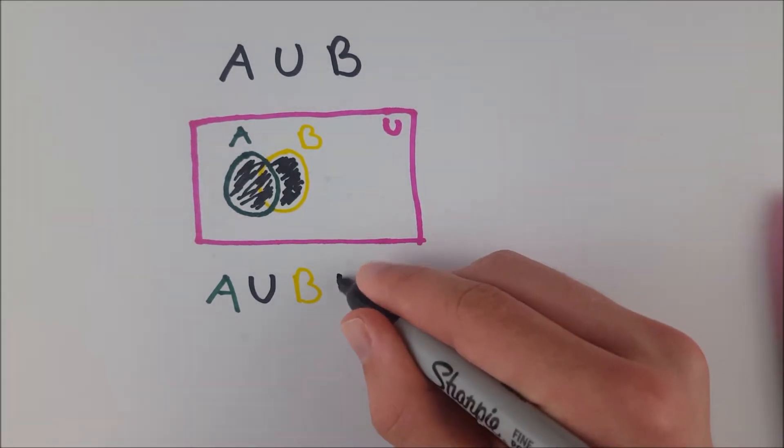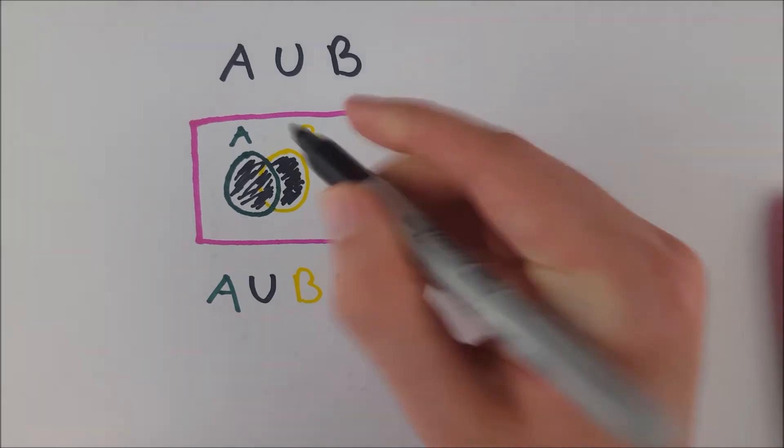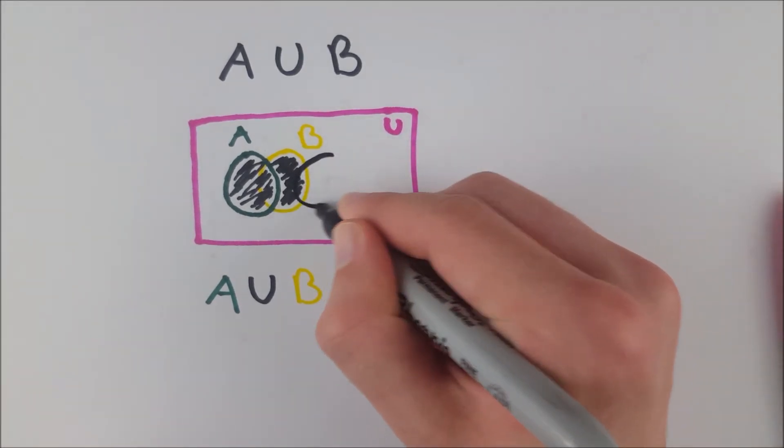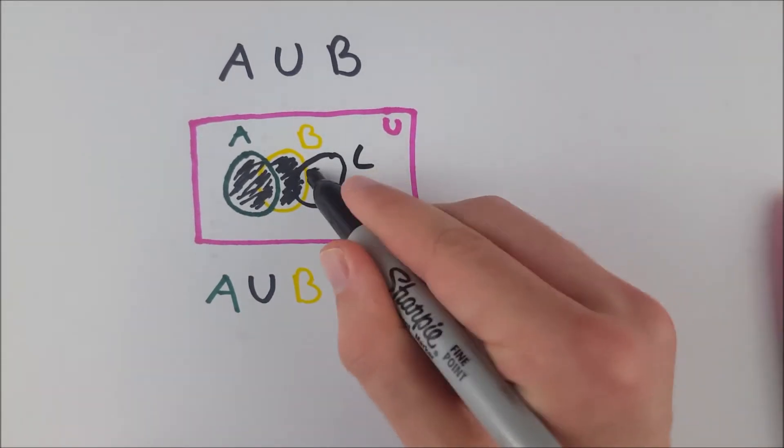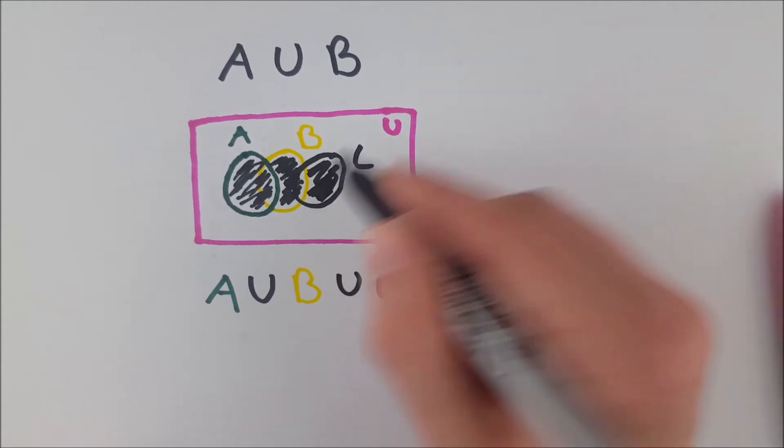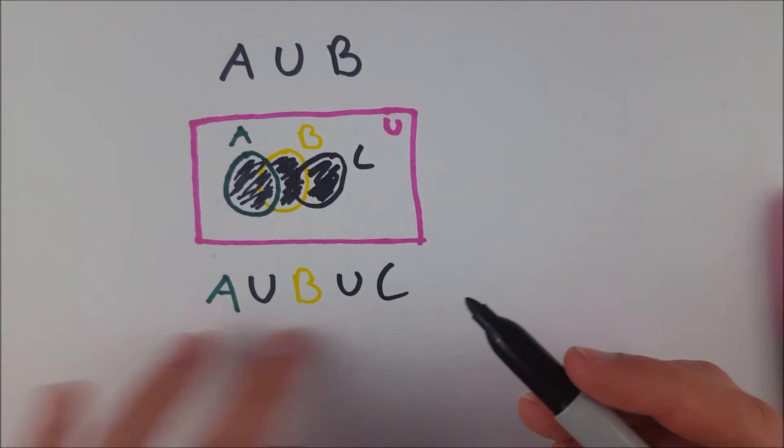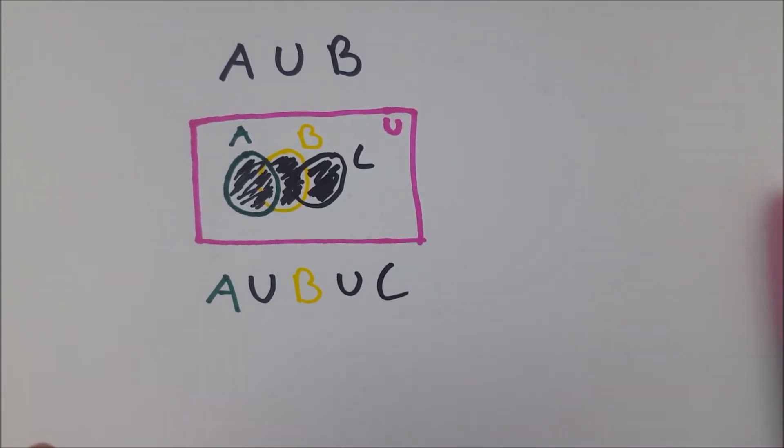And if we extended this, say A union B union C, and we threw in another set here, set C, we'd also shade in all of that. So the union just takes everything from all of the sets being unionized.